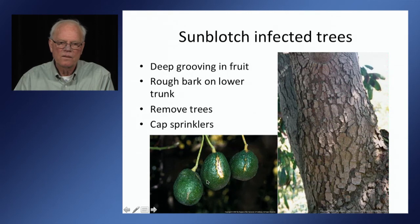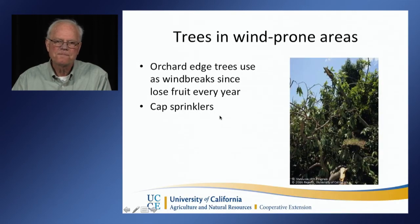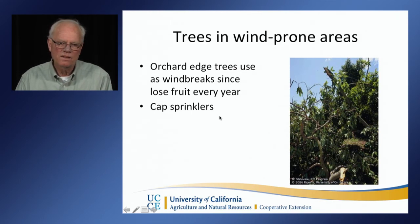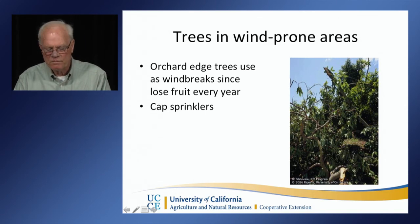Sunblotch trees: this is a viroid that affects the fruit, causing scarring and discoloration that significantly discounts fruit, and it affects the bark, producing an alligator-type skin pattern. Ideally, remove the trees and cap off the sprinklers — this will be an ongoing problem. Wind-prone areas: in Santa Ana conditions and what are called sundowners in Santa Barbara, the marginal trees on the edge of the orchard get too much wind and drop fruit. However, they do protect the rest of the orchard, so you can cap the sprinklers on these trees without removing them, keeping them as windbreaks.